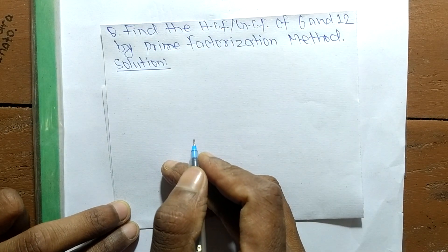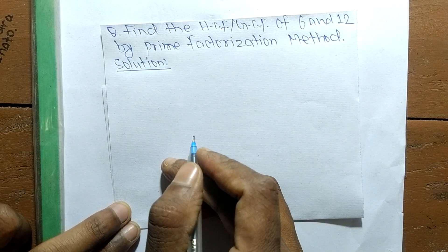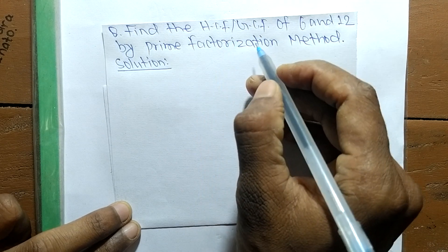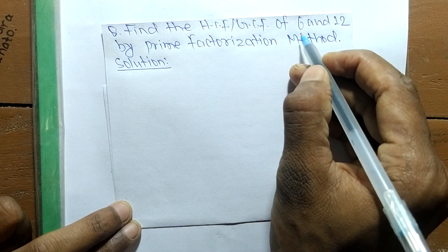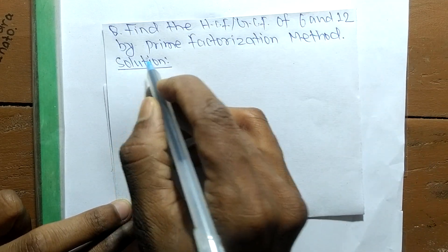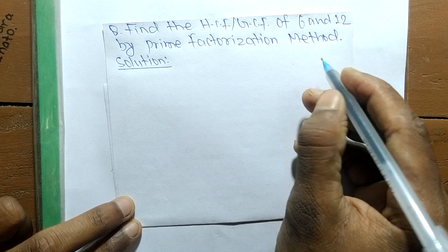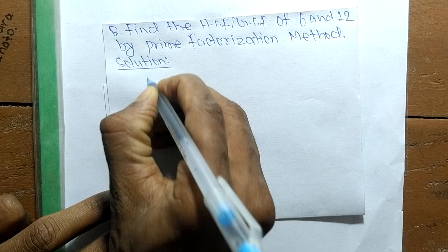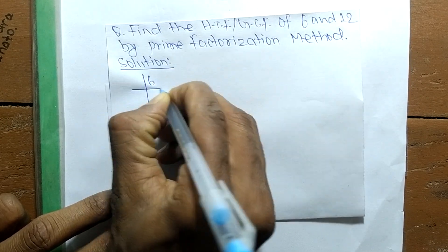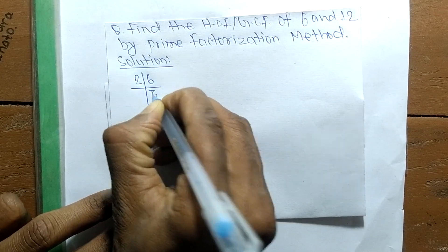Today in this video we shall learn to find the HCF or GCF of 6 and 12 by prime factorization method. First, we find out the prime factors of 6. So it is 2 times 3 means 6, and 3 times 1 means 3.